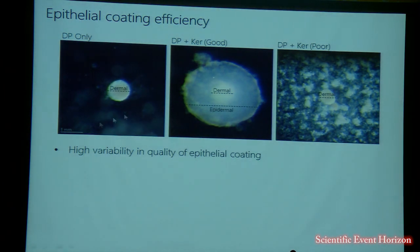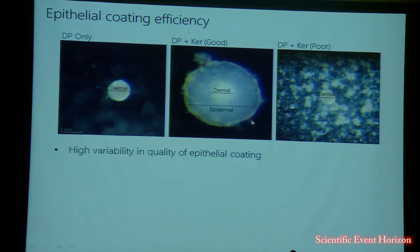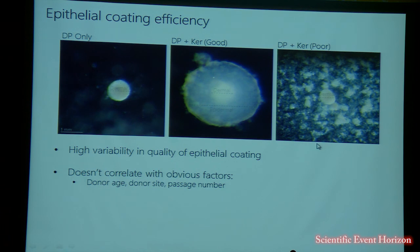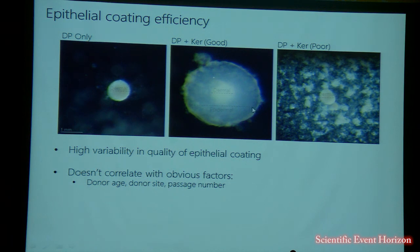This is an example of our attempts to make double spheres. This is a nice dermal papilla sphere with a tight core. After three days of formation, we add the epithelial cells into the hang drop. Unfortunately we're getting extremely low efficiency of coating — only about 20% of the time do we see a good double sphere with the tight dermal core and epithelial cells sitting tightly around it. Normally the epithelial cells stick to each other rather than onto the dermal core, with no clear correlation to donor age, donor site, or passage number. We're continuing to work on this and hoping to get sufficient numbers to analyse the gene signature of the dermal core.